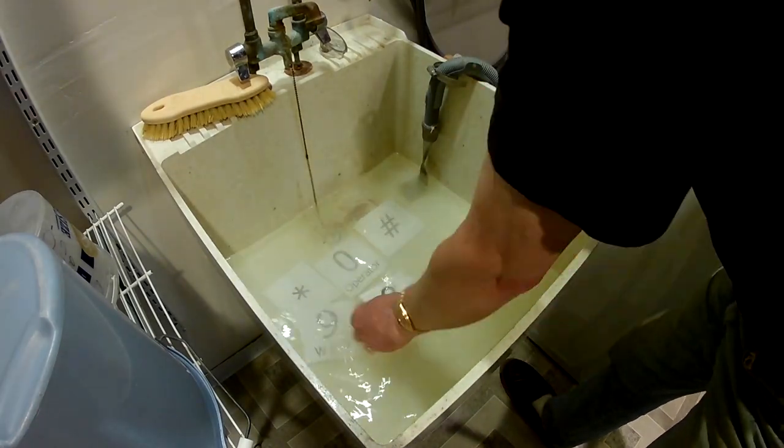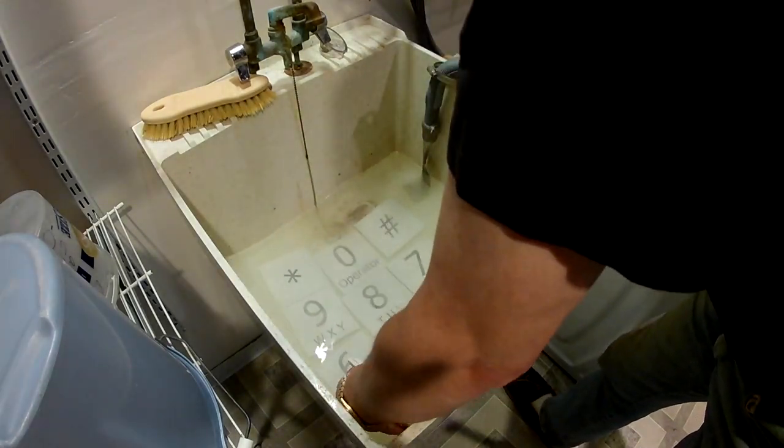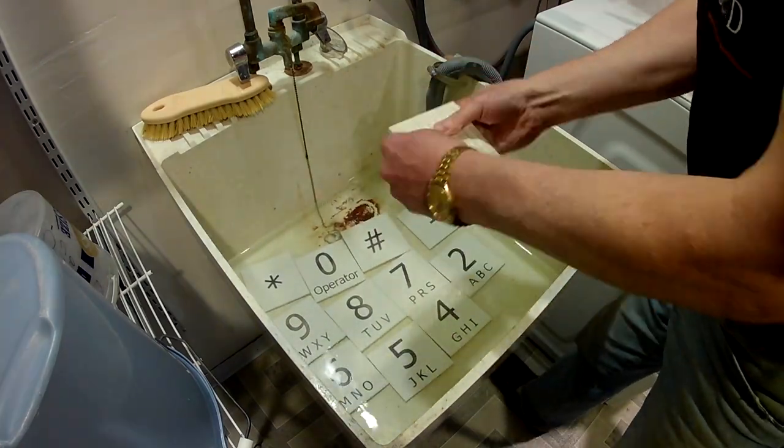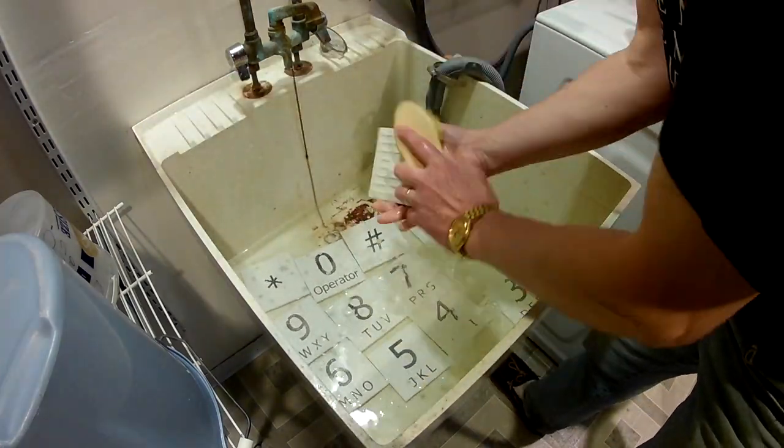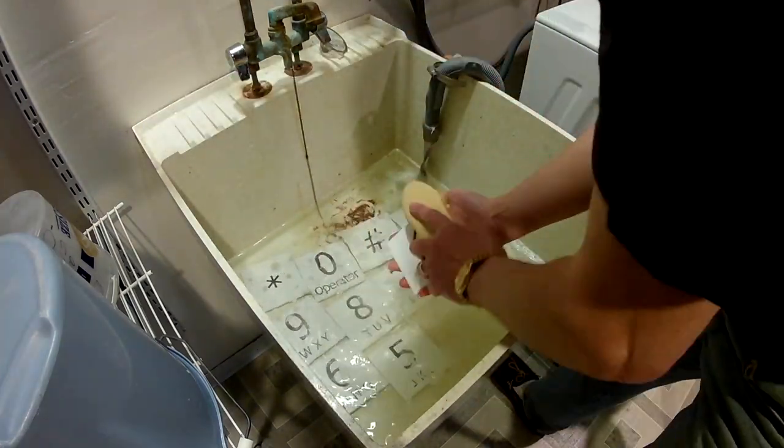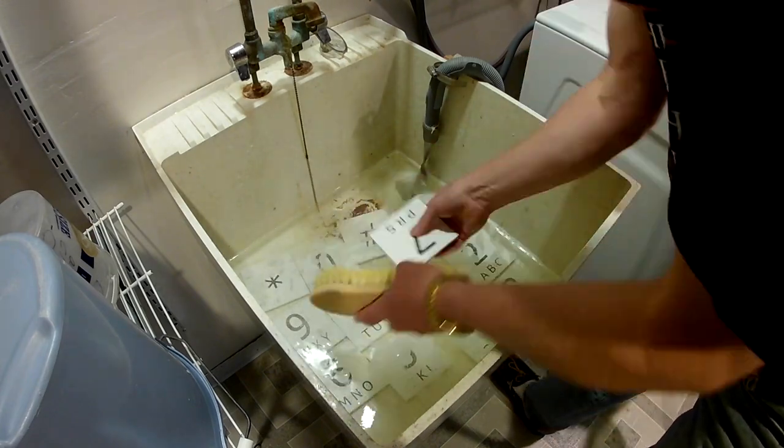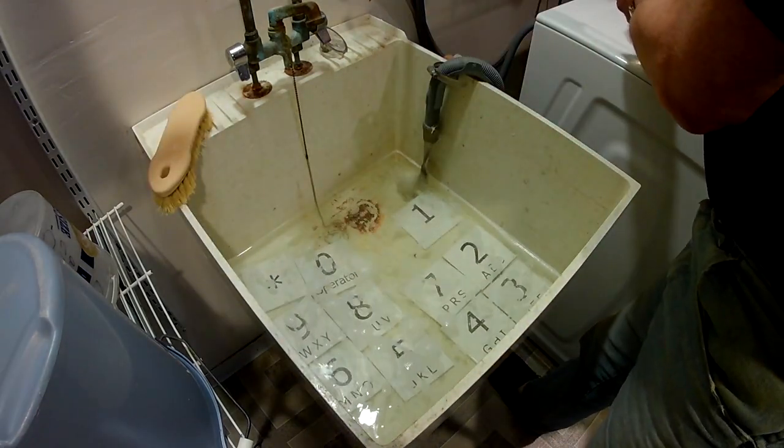The next step in the cleaning process is to clean any remaining dirt and chemicals off of the tiles. I just used some warm water and some soap and a scrub brush. Clean each of the sides of the tiles and the edges and then rinse them off to make sure they're nice and clean.